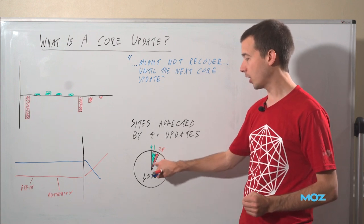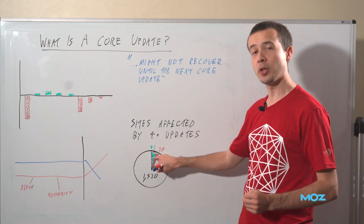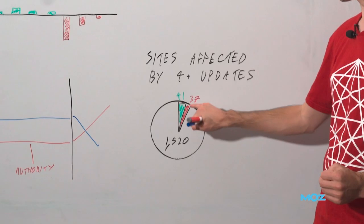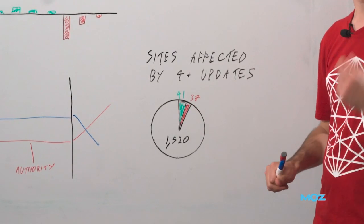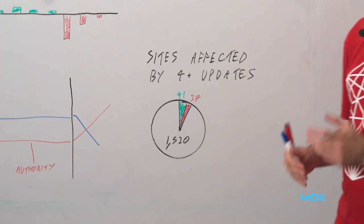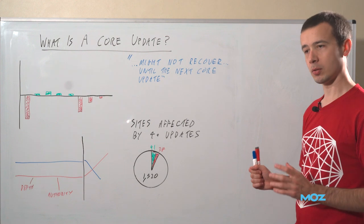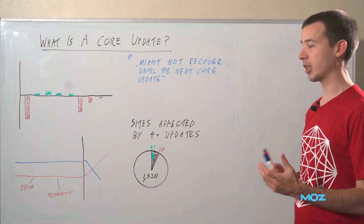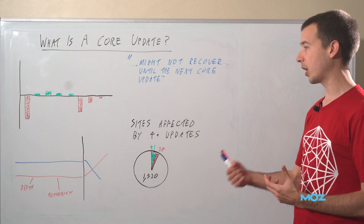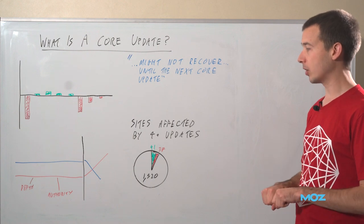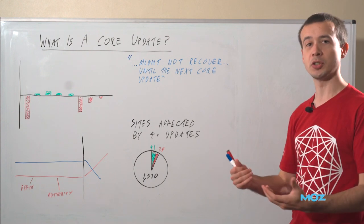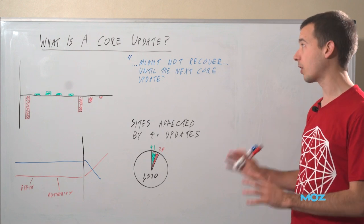So this tiny green slice represents the sites that only saw positive movements. And this red slice, the sites that only saw negative movements. So it's incredibly unusual to have monodirectional movement, which just shows that people are winning and losing as Google tests different things. It's not necessarily that some sites are just better suited to core updates and win every time. That's very, very rare.